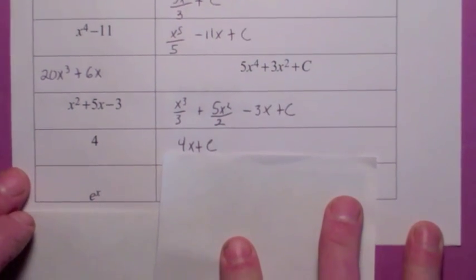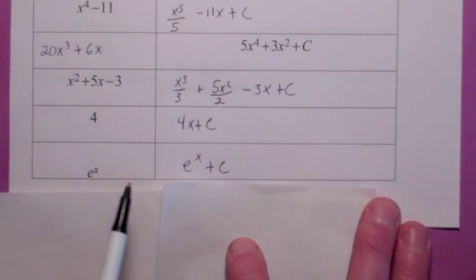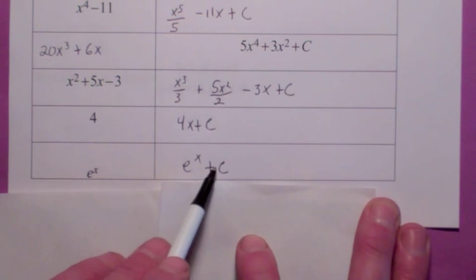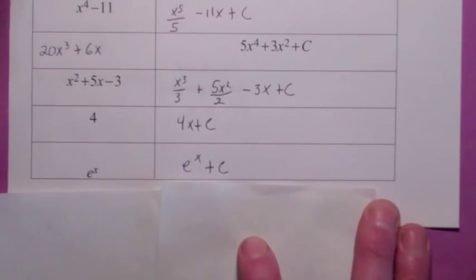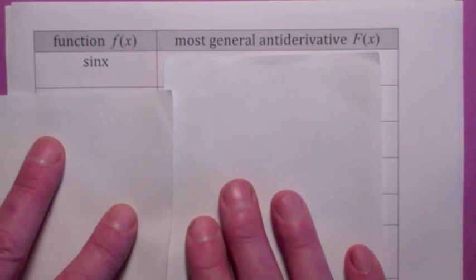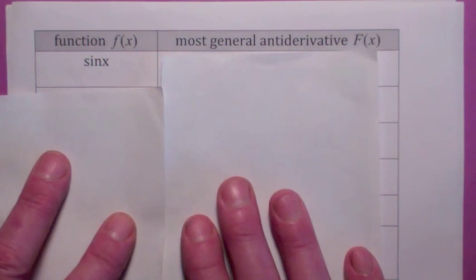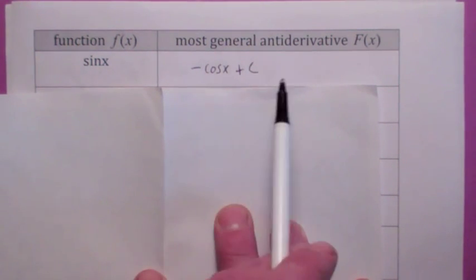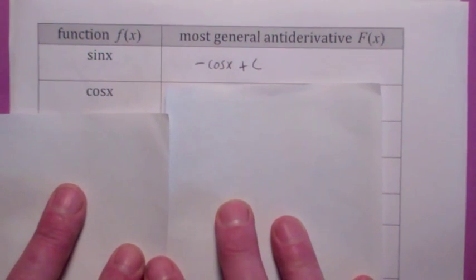What's the most general antiderivative of e to the x? It would be e to the x plus C. Technically, when we talk about antiderivative, we're talking about an interval — here the interval would be all real numbers. Every antiderivative of e to the x will be of this form for all real numbers. What's the most general antiderivative of sine x? You might say cosine x, but that's not right — the derivative of cosine x is negative sine x. So how about negative cosine x plus C? That's true on the interval of all real numbers. The most general antiderivative of cosine x would be sine x plus C.